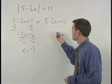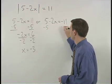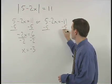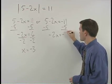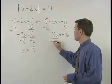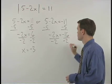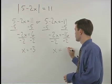On the right, we also subtract 5 from both sides to get negative 2x equals negative 16. Divide both sides by negative 2 and x equals 8.